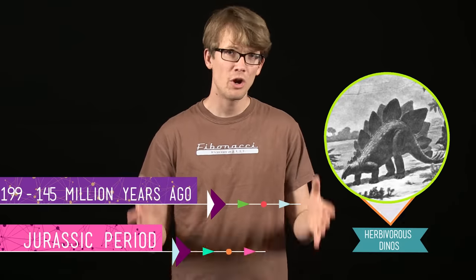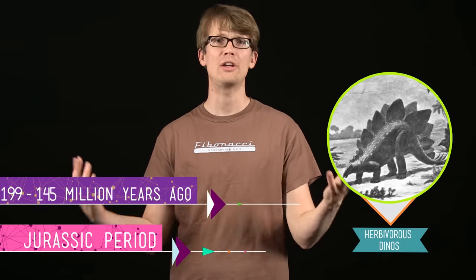So by the Jurassic period, about 199 to 145 million years ago, huge herbivorous dinosaurs were roaming the Earth. Smaller, mean carnivorous dinos were stalking the herbivores. The oceans were full of giant squid, ichthyosaurs, and long-necked plesiosaurs. The air was full of pterosaurs and the first birds. And there were mammals — small ones, but they were all over the place. It just wasn't our time to shine. The Jurassic was dino time and the dinos lived it up.